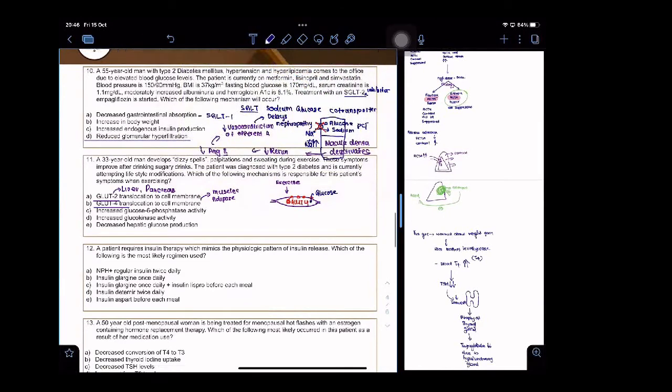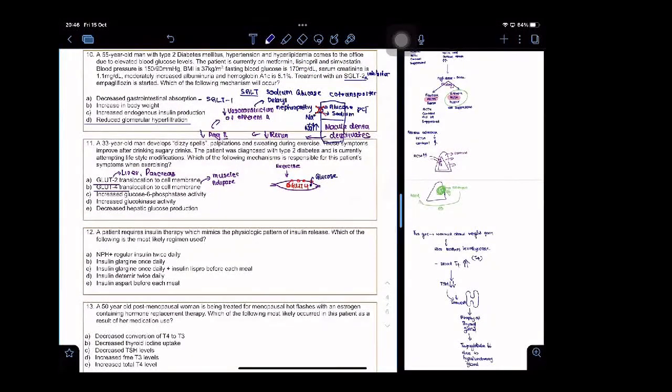Then, what happens is, blood glucose level goes down. When blood glucose levels go down, counter-regulatory hormones activate. One of them is glucagon. One of them is glucagon. And what causes these palpitations and sweatings?